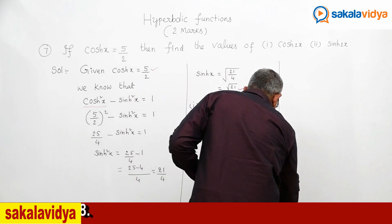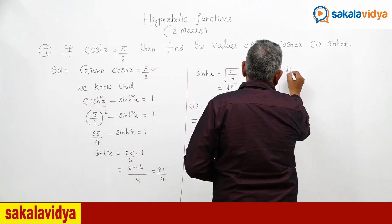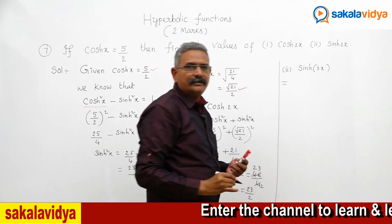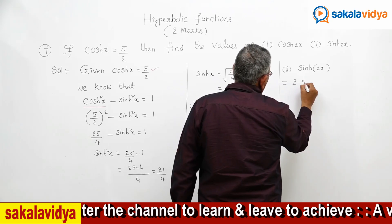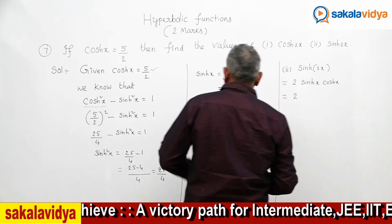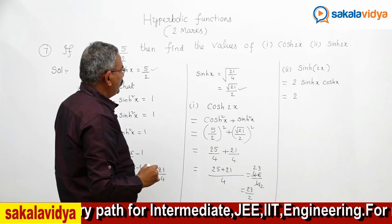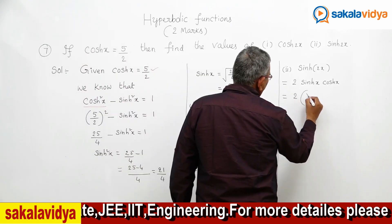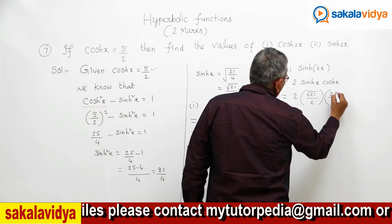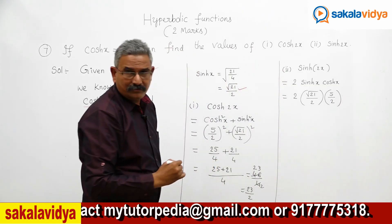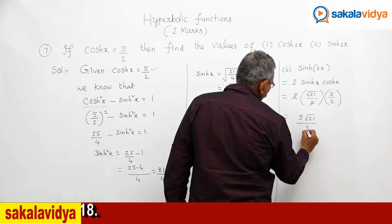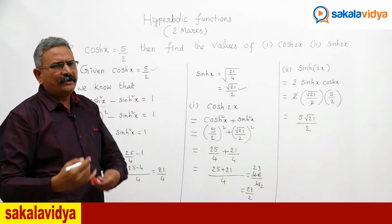For the second part, sinh(2x) uses the formula 2·sinh(x)·cosh(x). We have sinh(x) = root 21 by 2 and cosh(x) = 5 by 2. Substituting: 2 times root 21 by 2 times 5 by 2. The 2 and 2 cancel, giving 5·root 21 upon 2. This is the answer. You may write plus or minus also, no problem.